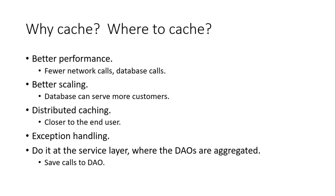We can also have distributed caching, where caches live closer to where the user physically is, but we're not going to talk about that here. Less chance of exceptions too — if we spend less time going outside our domain, we have fewer checked exceptions requiring try-catch blocks. Many times in Java, those occur because we're accessing something outside the JVM, like a file system or database. So service layer is where the DAOs are aggregated.